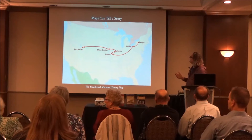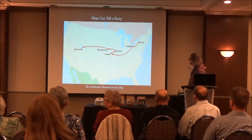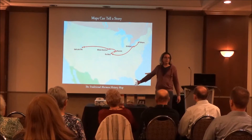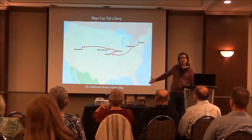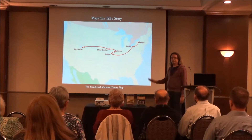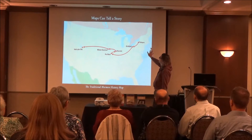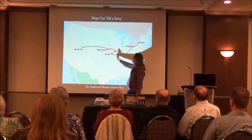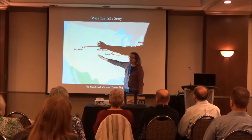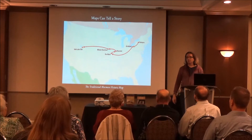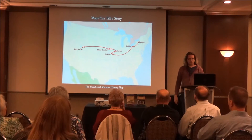Maps tell a story. This map here is what I call the traditional Mormon history map. If there were a standard history book for religious history in the United States, this is pretty well the story — essentially saying the Mormon experience starts in upstate New York, goes to Kirtland, somewhere in Missouri, Nauvoo, Winter Quarters, and Salt Lake. It's often drawn like this against the contemporary political borders of North America.